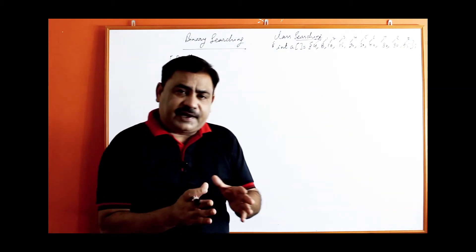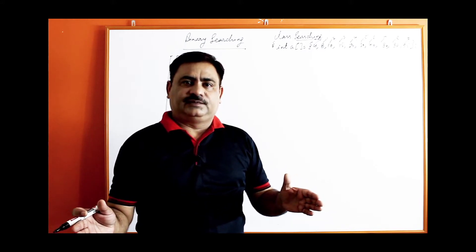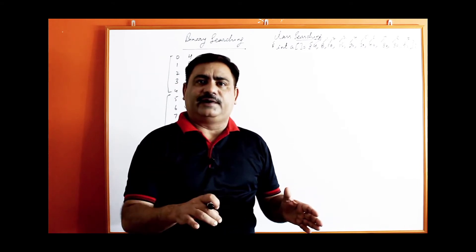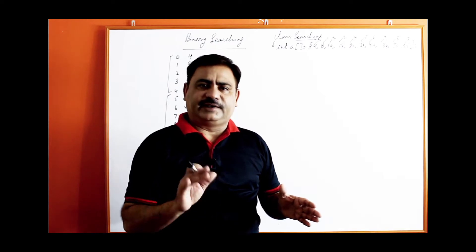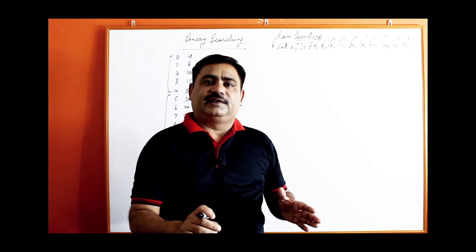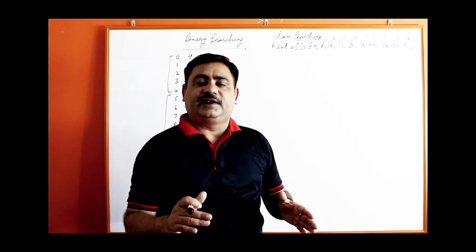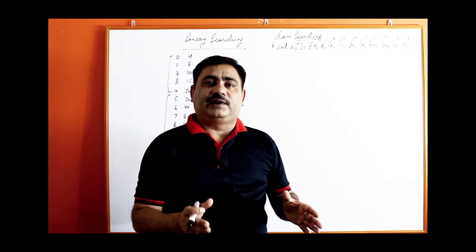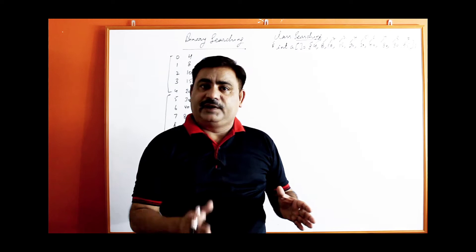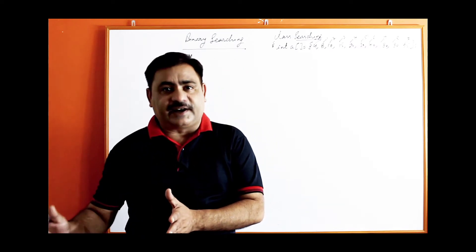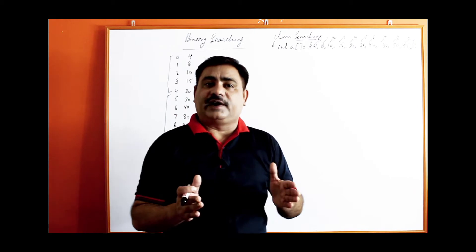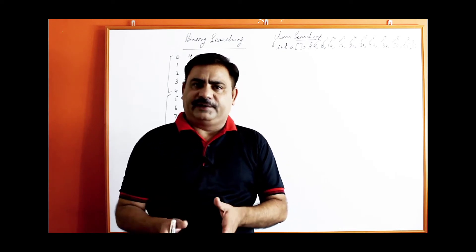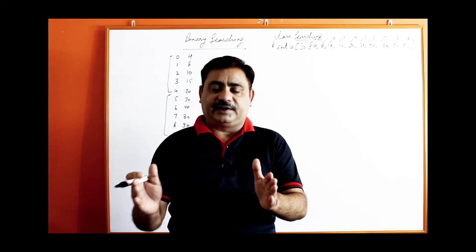Try to understand: if the array contains 100 values and we have to search a single value, first we compare the middle value, which may be at index 50 or 49. If it is present at the middle, return the index. If it is not present, if the value is greater, it can be between index 50 and 100. If it is smaller, it can be between 0 and 49.